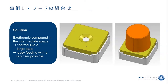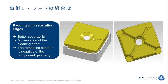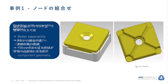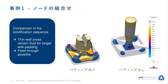The easiest approach is to imagine the padding material making the component behave as if material were added. If the plate were massive, we would just fill the area with exothermic material, then place a riser sleeve on top. For better separability, a breaker edge can be added. The rest of the padding geometry is the negative of the cast component surface. We then put this in simulation and check the results.